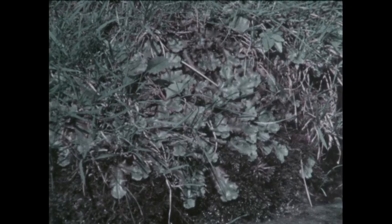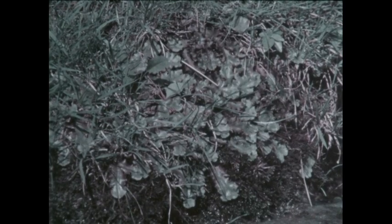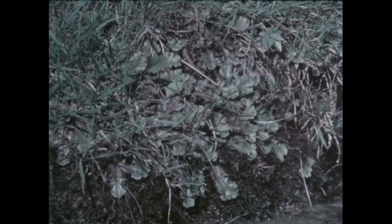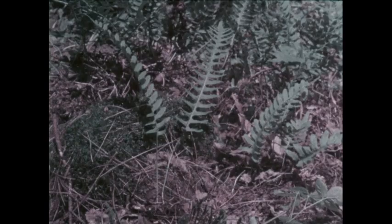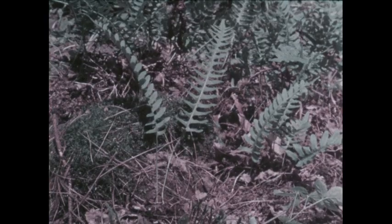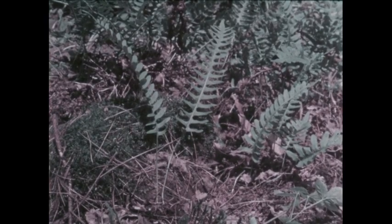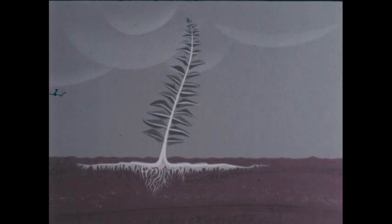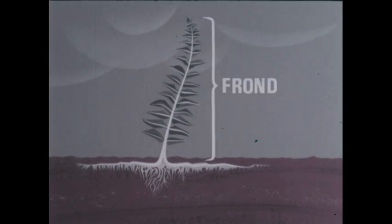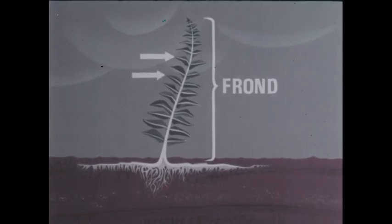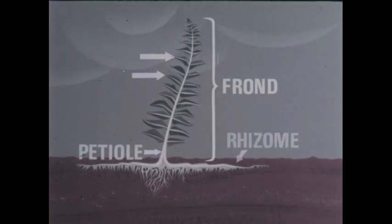Scientists speculate as to whether liverworts or their relatives, the mosses, were first to live on land. And they believe that ferns evolved more recently. Ferns have undergone more complex adaptations to an air and earth environment. They have leaves, each known as a frond. Most fronds have smaller leaflets. A frond is supported by a petiole, attached to a stem or a rhizome.